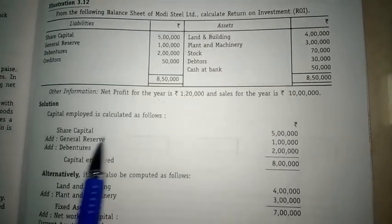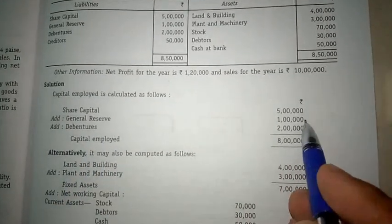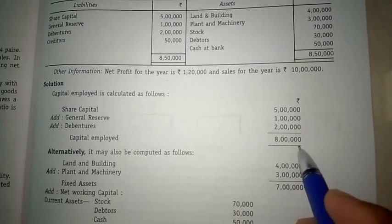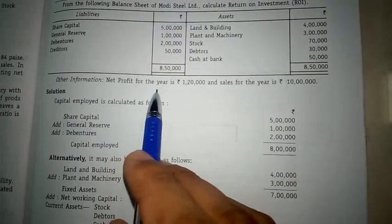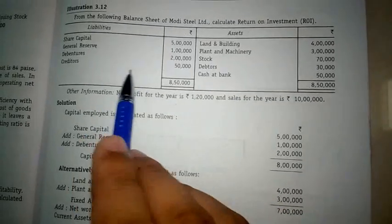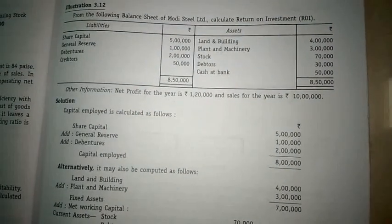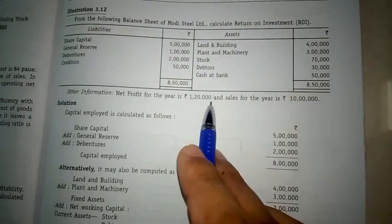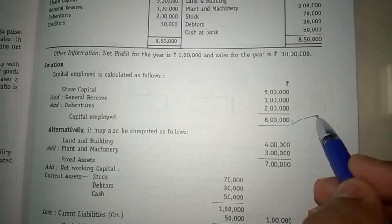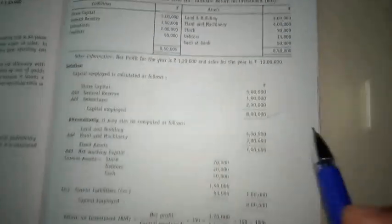On the asset side, there are no preliminary expenses or non-operating investments. So, total capital employed: share capital 5 lakh, plus general reserve 1 lakh, plus debentures 2 lakh, equals 8 lakh rupees. Note: net profit is not considered here because it is already present in the balance sheet. Net profit given in the balance sheet is included in capital employed; net profit given as an adjustment is not.